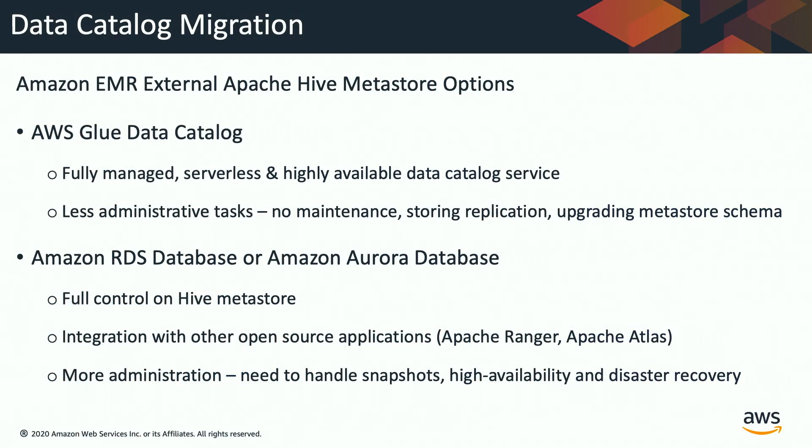When migrating your Apache Hive Metastore to Amazon EMR, you have two options. The first is AWS Glue Data Catalog — a fully managed, serverless, highly available data catalog service. Since it's fully managed and serverless, you don't have to maintain replications, manage scaling, or handle schema upgrades when the Hive Metastore changes. AWS takes care of all of that for you.